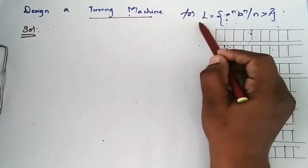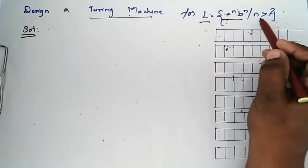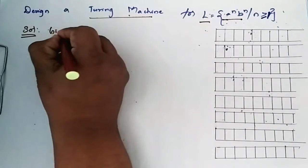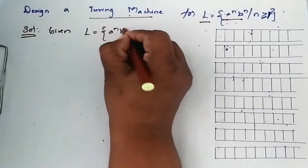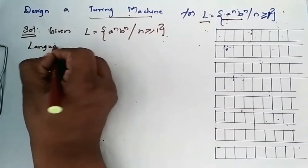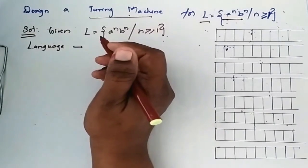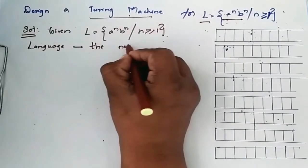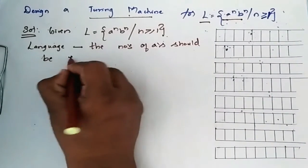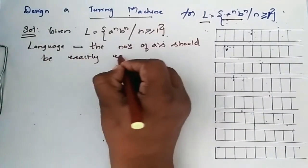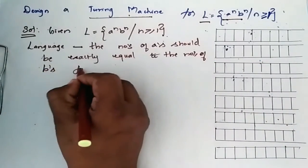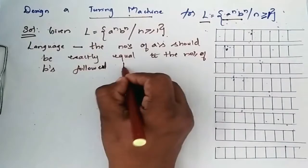Design a Turing machine for L = aⁿbⁿ for n greater than or equal to 1. This language accepts strings where the number of a's should be exactly equal to the number of b's, with all b's followed by a's.